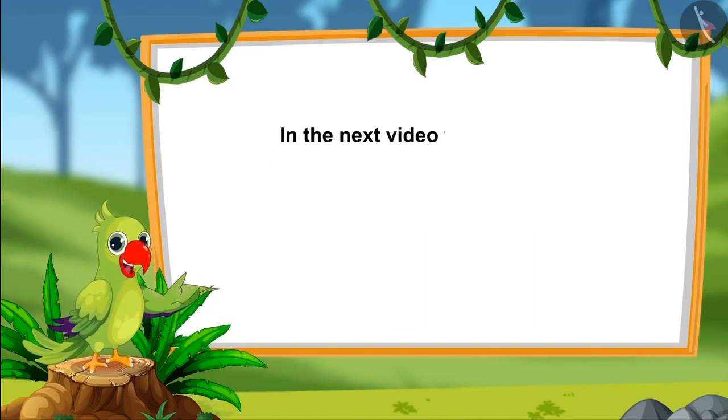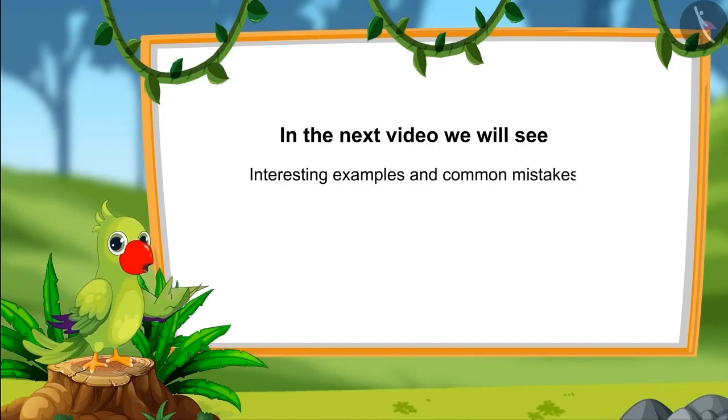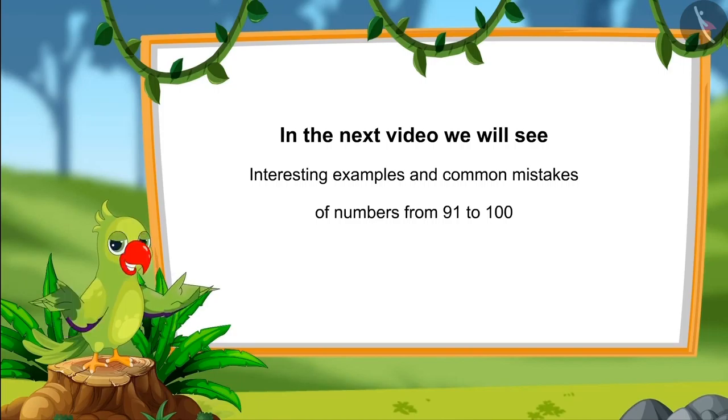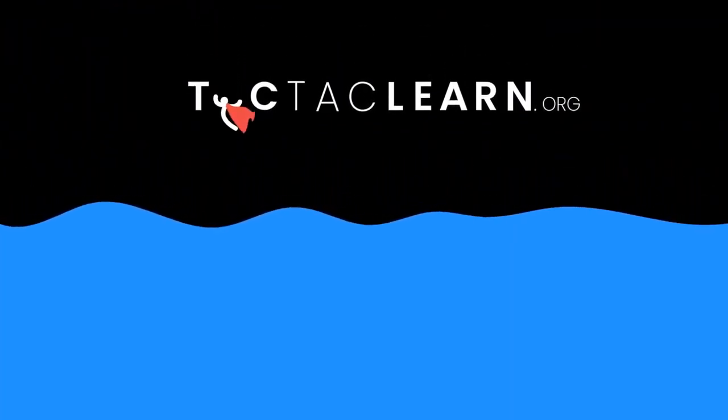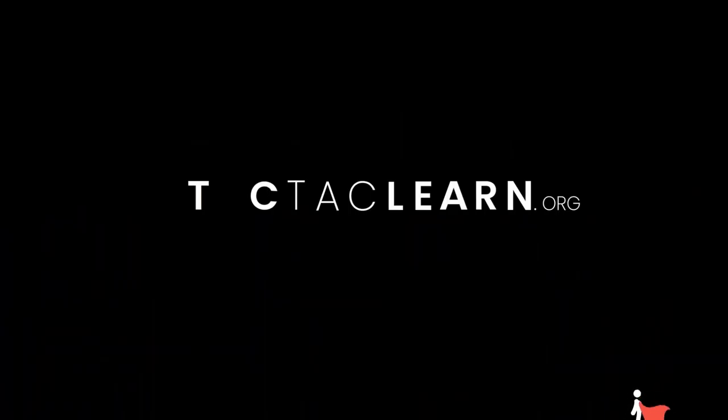So, children, that was all for today. In this video, we saw some interesting examples of numbers from ninety-one to hundred. In the next video, we will see some more interesting examples of numbers from ninety-one to one hundred and learn about some common mistakes that we all should avoid. Till then, bye, children.